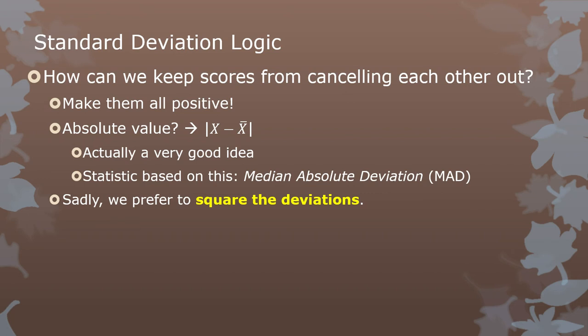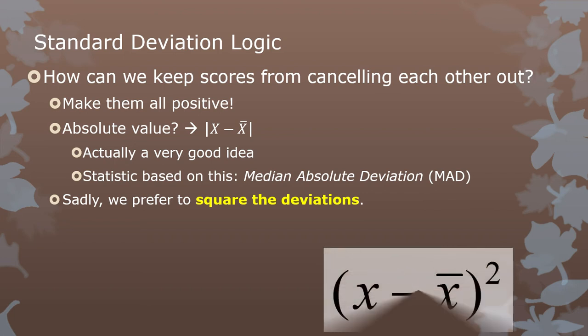So how can we keep the scores from canceling each other out? It's actually pretty easy — you just take the absolute value: absolute value of X minus X-bar, then add them all up and take the average. That's a completely reasonable approach, and there is a statistic based on this called the median absolute deviation, MAD, which some people use instead of the standard deviation. Unfortunately, we prefer to do something different to make deviations positive: we square them. Squaring anything makes it positive — positive squared is positive, negative squared is positive.